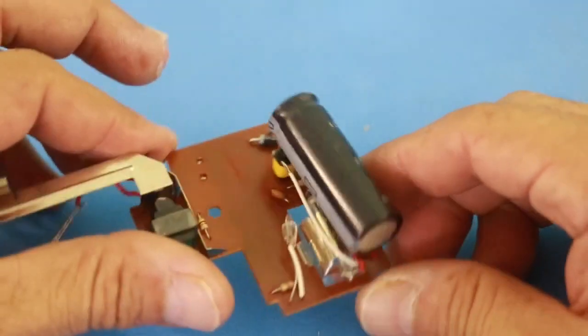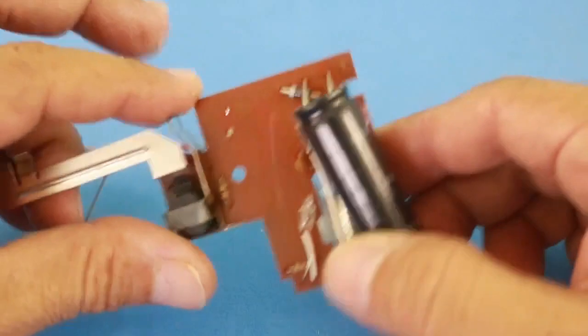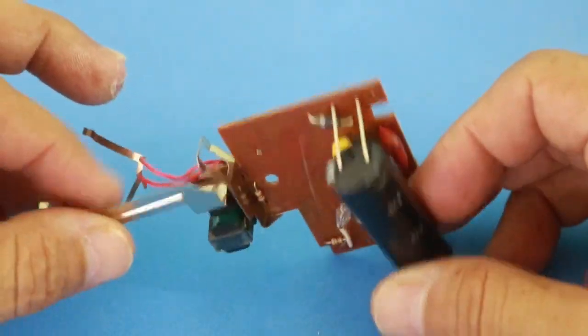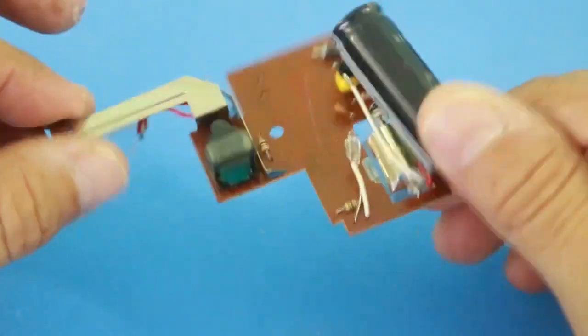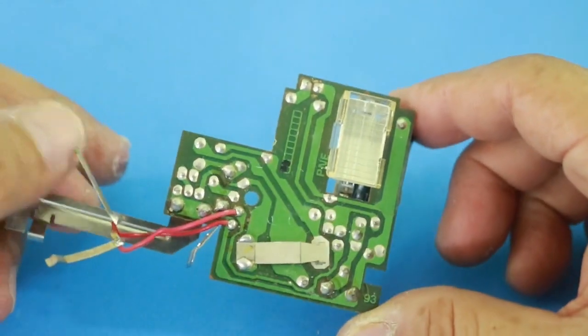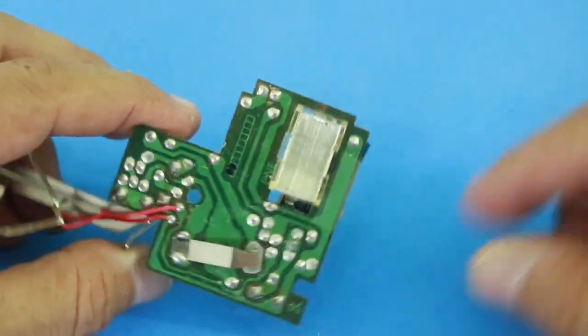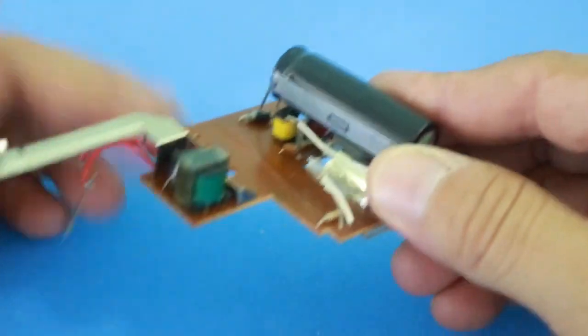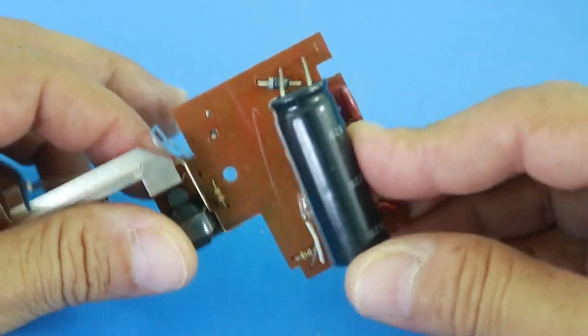The capacitors that I use for the capacitor bank are these photo flash capacitors from the flash circuit of a disposable camera. Here you can see the flash.